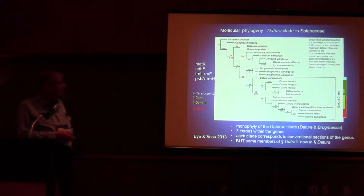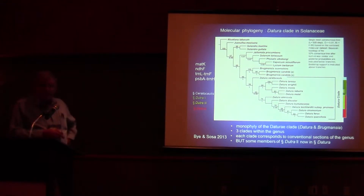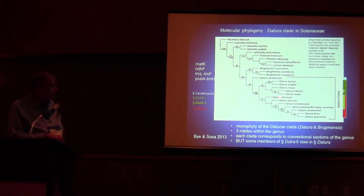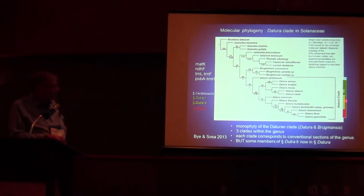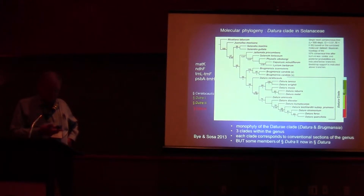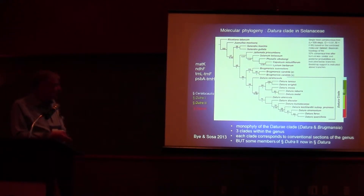Just recently we've published the molecular phylogeny of this group, and the important point is that we've gone back to three sections within the genus. Brugmansia, which used to be in Datura, is clearly distinct. We have the Stramonium group, the Datura subsection, the Ceratocaulis aquatic species, and Dutra clearly divided into subclades. We spent three years trying to understand why one Dutra group jumped into the other — which re-emphasizes that you have to look at your data and believe it, even if you're not fully convinced.